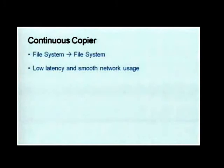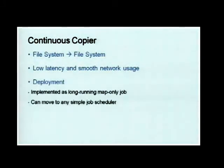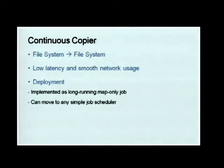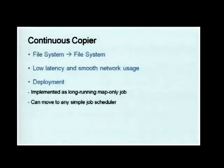The continuous copier basically copies the file as it grows, so it's much easier to use. It is deployed as a set of individual tasks running as a map-only job on Hadoop. There's no direct communication between those tasks, so it can be moved into any simple job scheduler outside of the MapReduce framework.